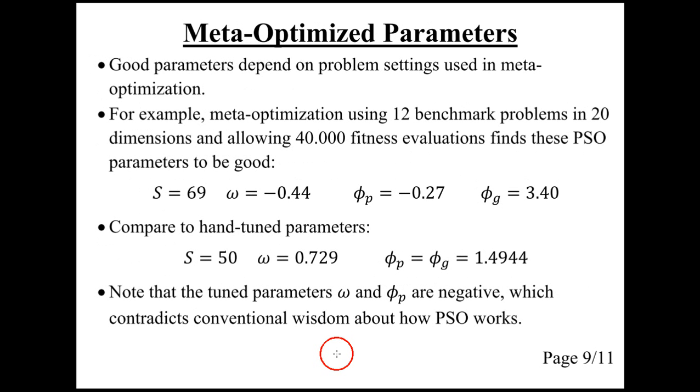The parameters found with meta-optimization depend on the problem settings. For example, if we use 12 common benchmark problems in 20 dimensions each and allow 40,000 fitness evaluations or iterations for each problem, then the good PSO parameters are found to be swarm size of 69 particles, omega of minus 0.44, and so on.